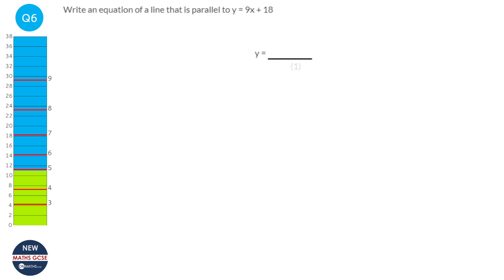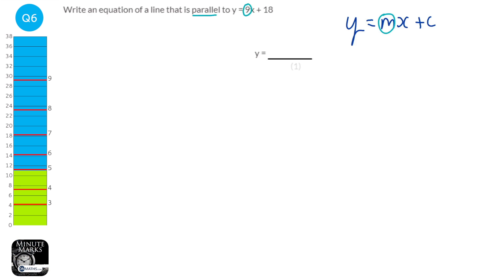The formula y equals mx plus c includes m, and m means the gradient. So if we're looking for something parallel to y equals 9x plus 18, we're looking at the gradient, which is 9. For the line to be parallel, it needs to have the same gradient. So we could write y equals 9x plus or minus anything — for example, y equals 9x plus 5.